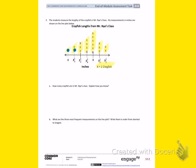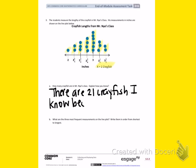So I have one, two, three, four, five, six, seven, eight, nine, ten, eleven, twelve, thirteen, fourteen, fifteen, sixteen, seventeen, eighteen, nineteen, twenty, twenty-one. So I can write as a sentence: there are twenty-one crayfish. Explaining how I know, I would write that I know because I counted all the X's.